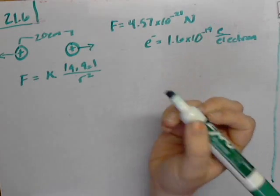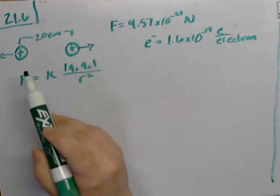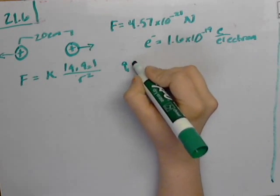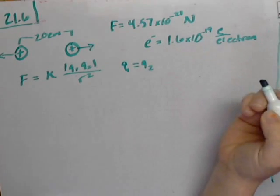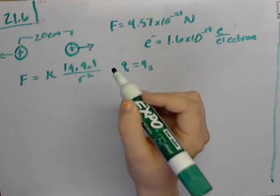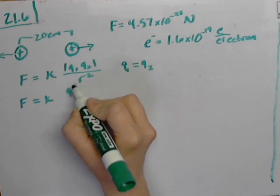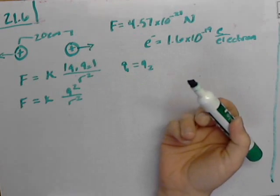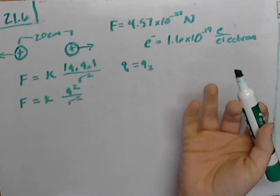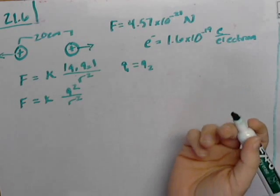So since it tells us in the problem that these are equal charges, what we can do is say Q1 is equal to Q2. So therefore, this equation changes to F equals K Q squared over R squared. The absolute value signs can go away because once you square something, it's going to be positive.